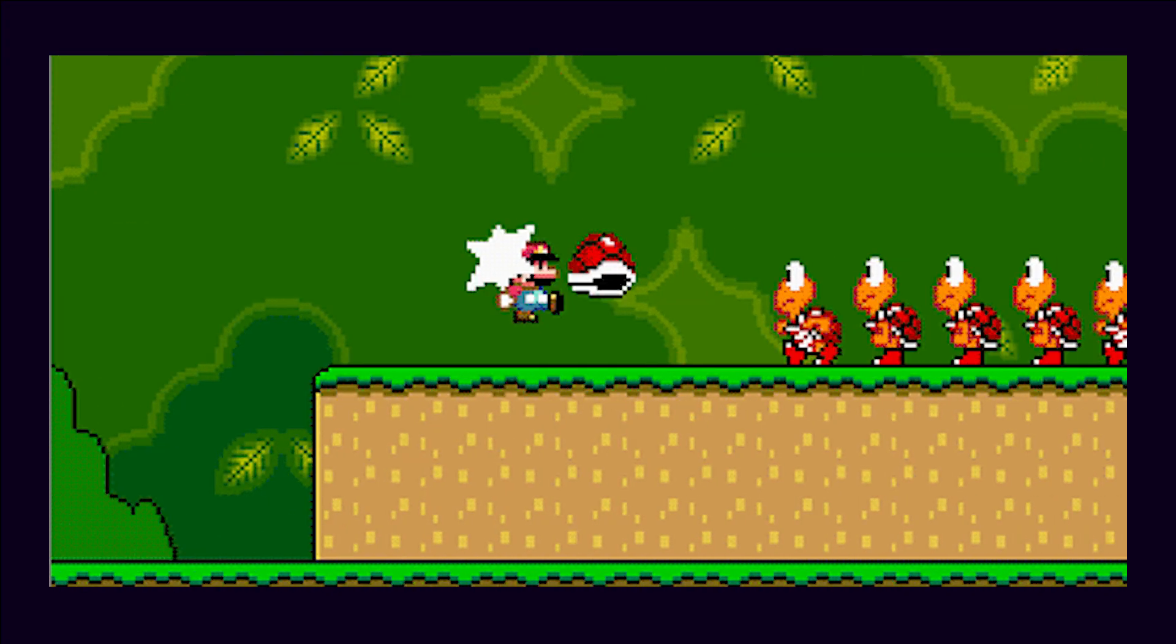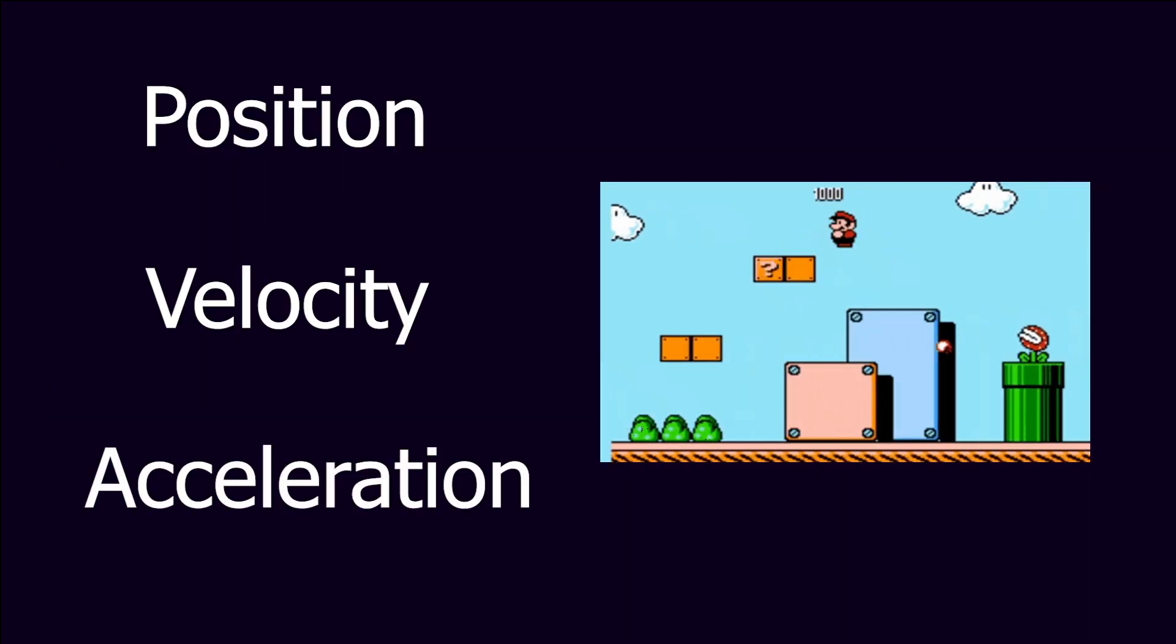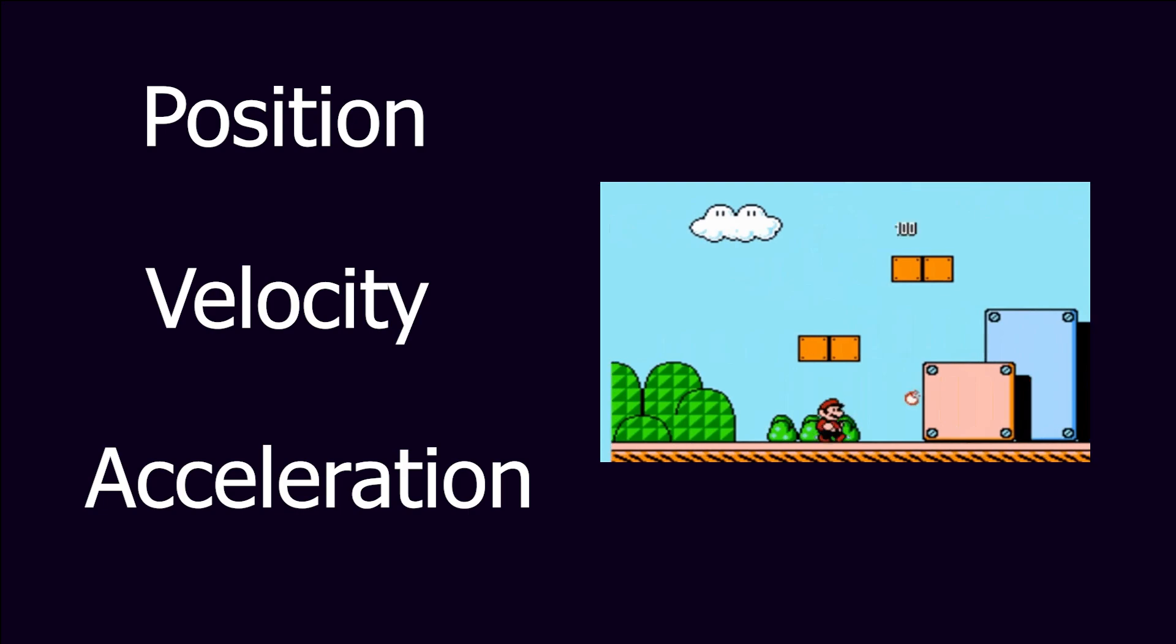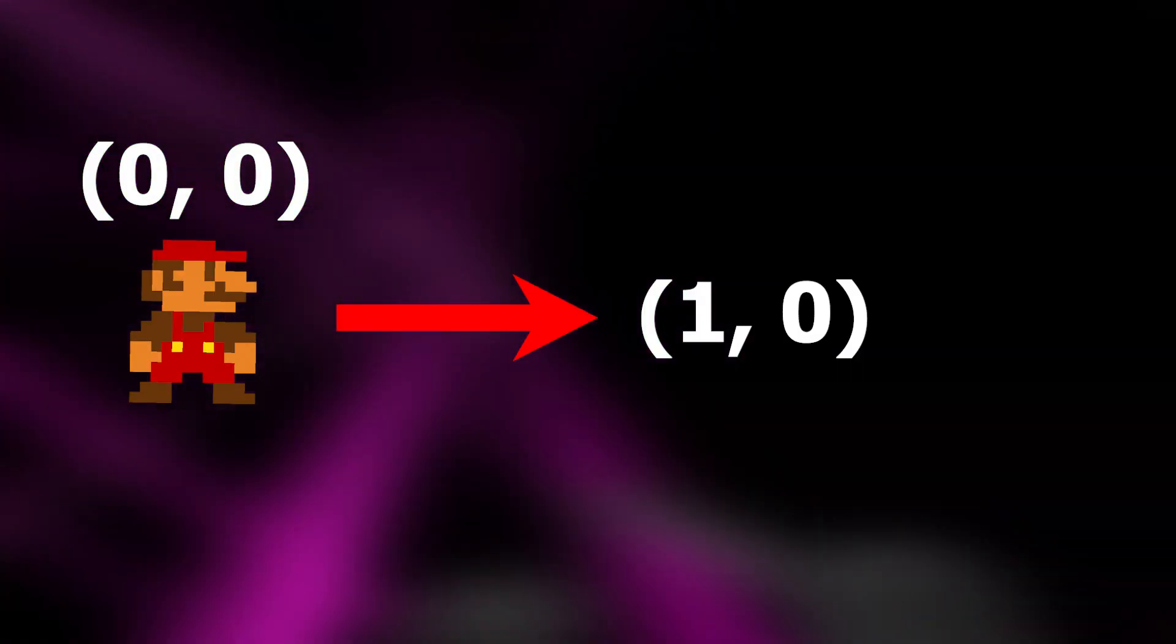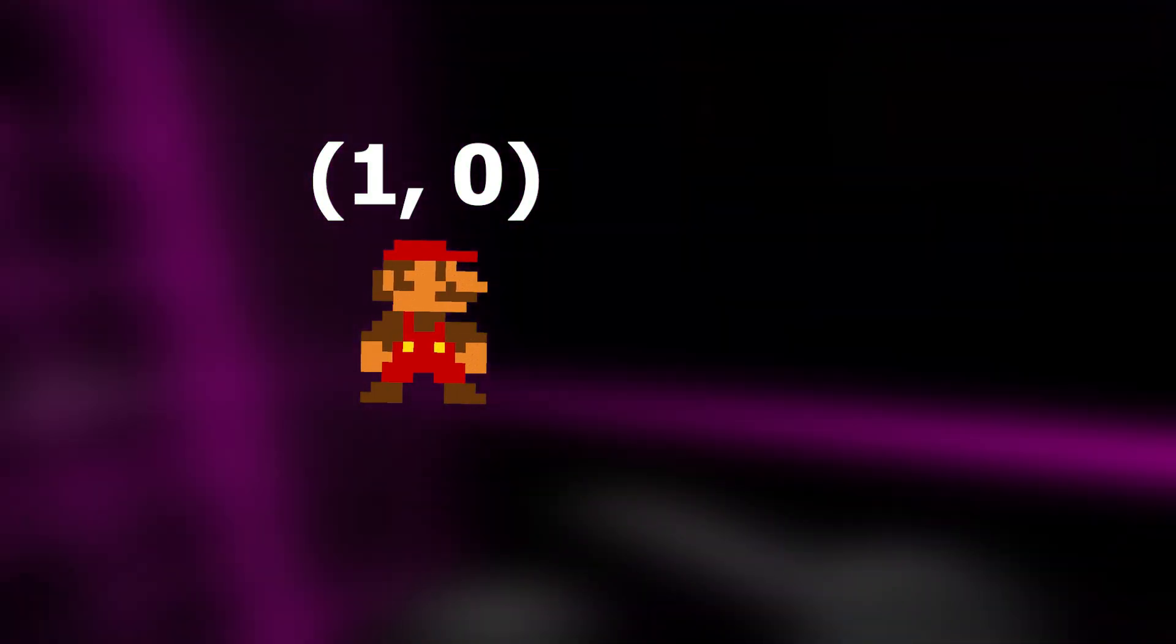My first example will be Mario. Mario uses position vectors, velocity vectors, and acceleration vectors for Mario's movement. The position vector just stores the position that Mario is in, while the velocity vector is what's getting applied to the position vector in order to move Mario.